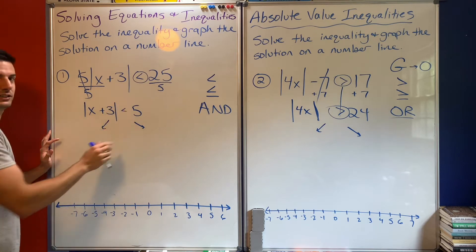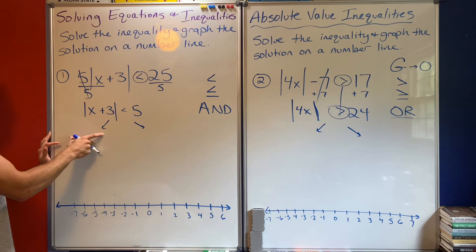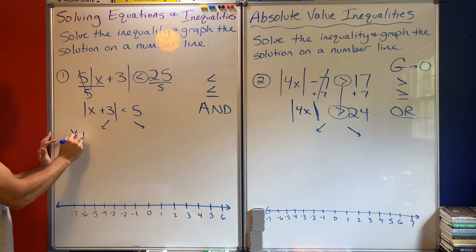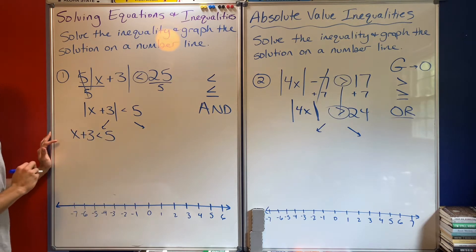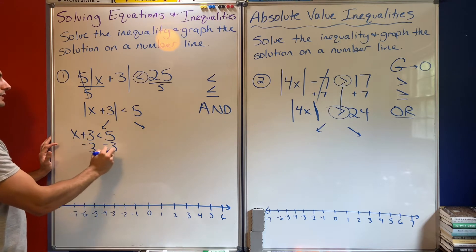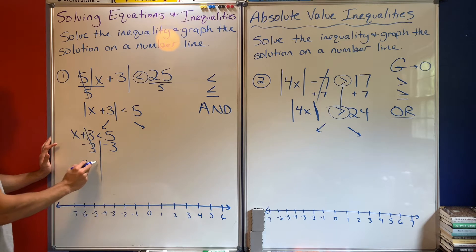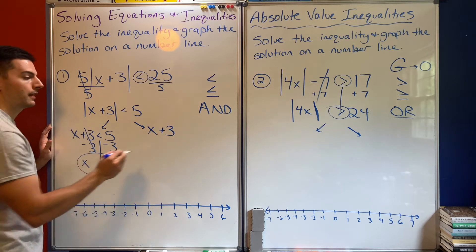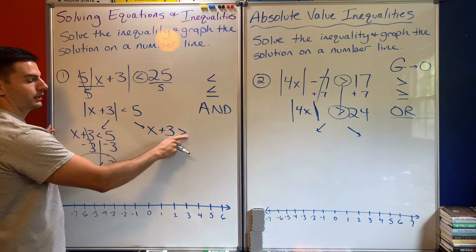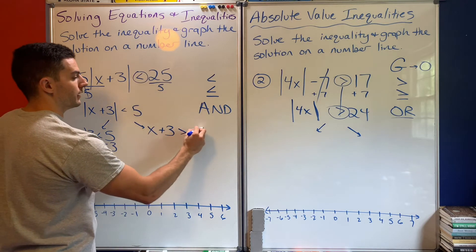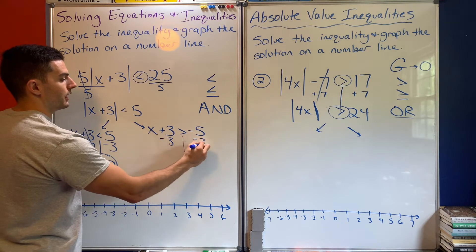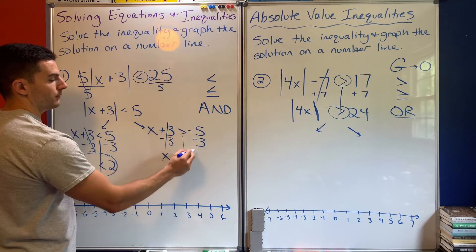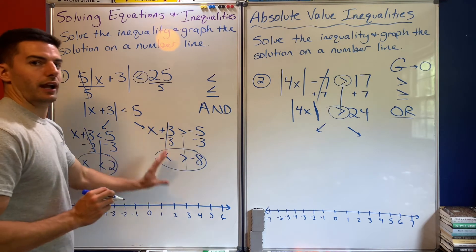Finishing these out and solving: the first one I split would be just the same thing without the absolute value bars, so x plus 3 is less than 5. Minus 3 from both sides gives x is less than 2. Then for the second one — this is where the double flip happens — x plus 3 is greater than negative 5, and minus 3 from both sides gives x is greater than negative 8.